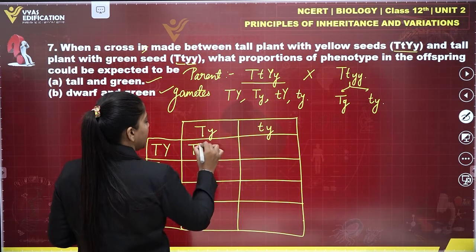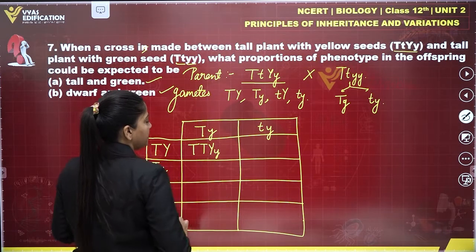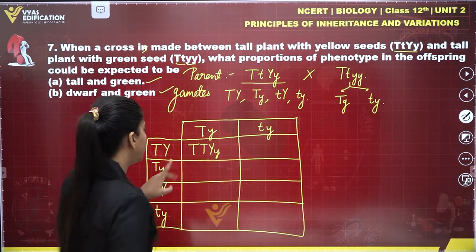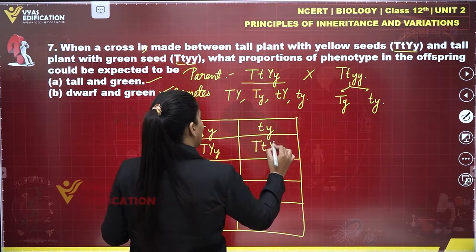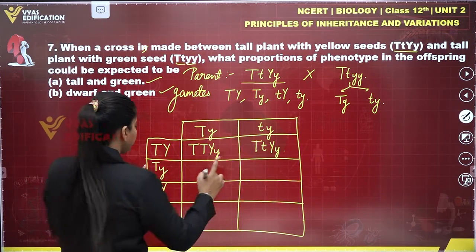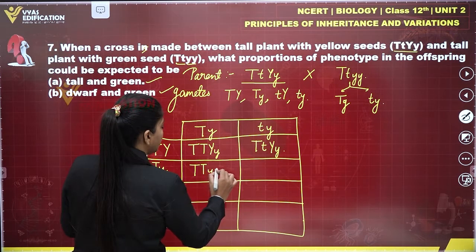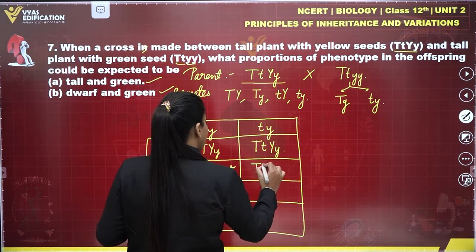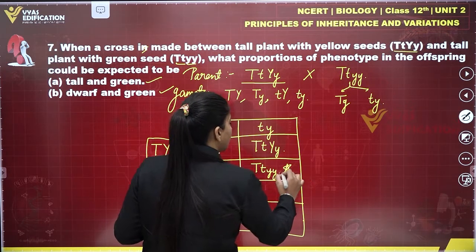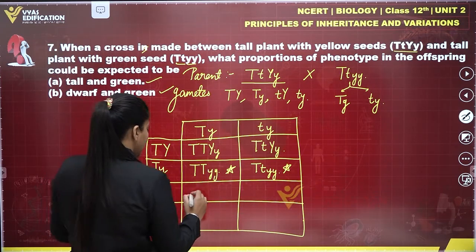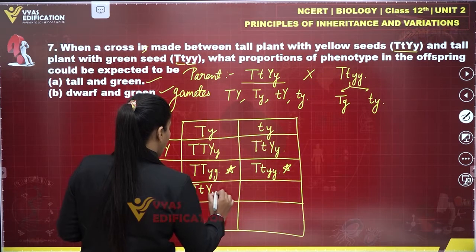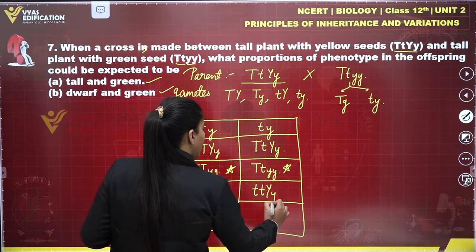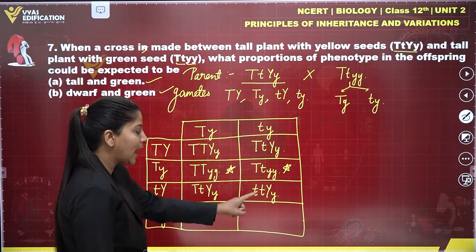Fusing the gametes: the first result is TTYy — a tall plant with yellow seed. Next is TtYy — a tall plant with yellow seed. Next is TtYy — tall height with green seeds. Next is Ttyy — also a tall plant with green seeds. Then TtYy — tall height and yellow seed.